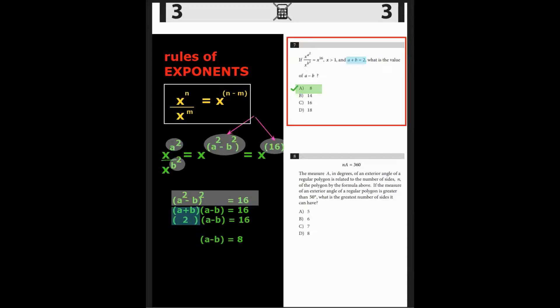Using the factor pattern, we know a squared minus b squared is equivalent to a plus b times a minus b, which is 16. Conveniently, the writer gave us that factor a plus b equals 2. So we plug that in. 2 times a minus b equals 16. Divide both sides by 2. And a minus b equals 8. The correct answer was a.